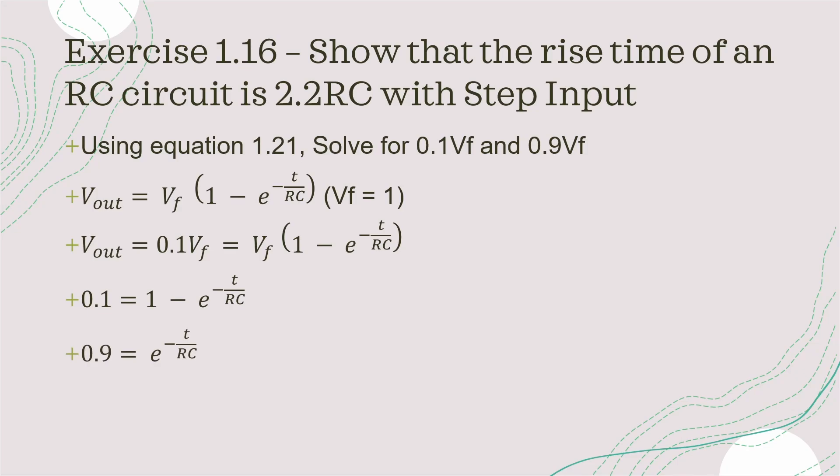Now bringing 1 over to the other side we get 0.1 minus 1 equals minus e to the power of minus t over RC. Now if you remove the minus sign from both sides, we get 0.9 is equal to e to the power of minus t over RC. Taking the natural log on both sides we get rid of the exponential. So we got natural log of 0.9 is equal to minus t over RC.